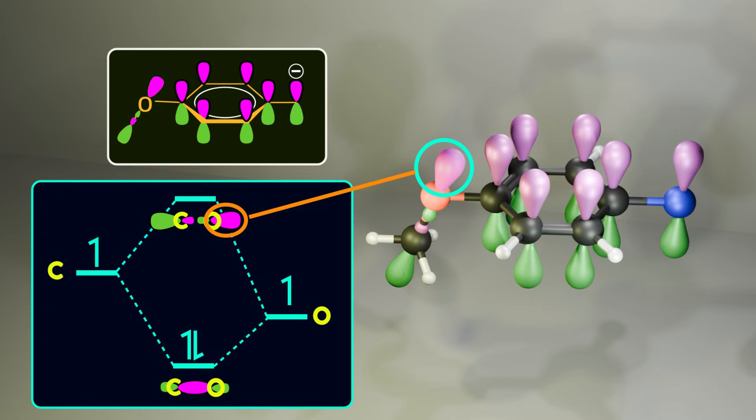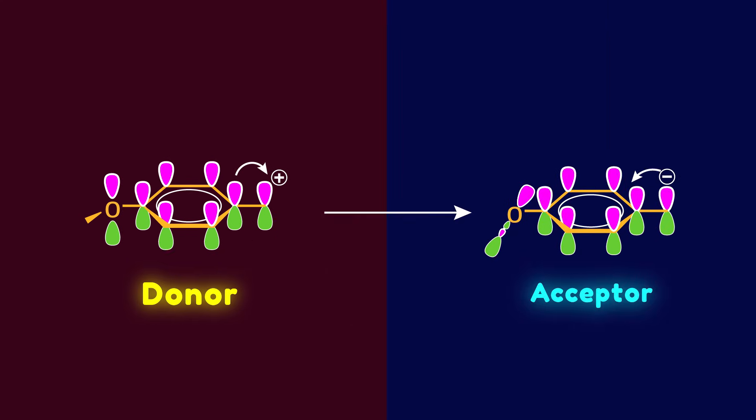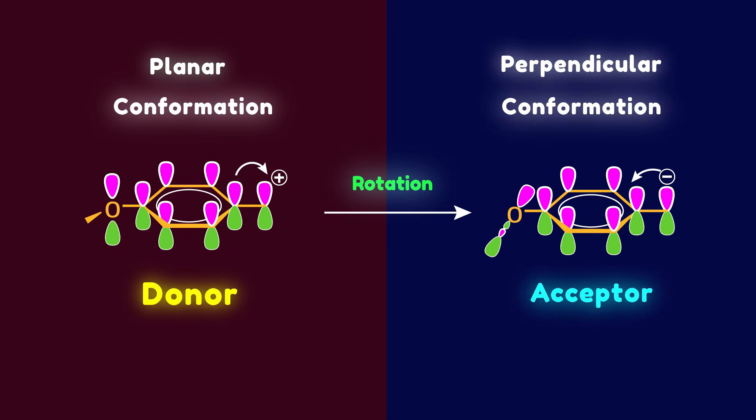And this is possible because of the high electronegativity of the oxygen atom. In other words, the anti-bonding orbital is low enough in energy to be accessible to the carboanion. So you see how the methoxy group is converted from a donor to an acceptor by a simple rotation. In the planar conformation, the oxygen atom donates its non-bonding electrons. But in the perpendicular conformation, it accepts electrons from the carboanion through its anti-bonding orbital.